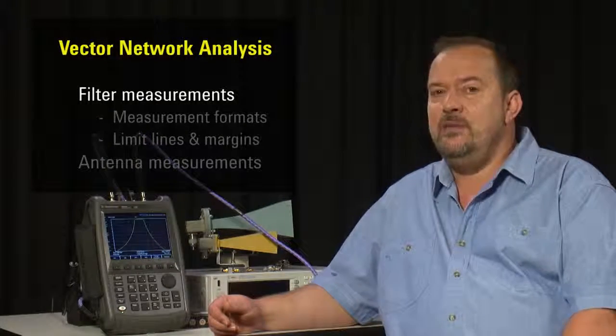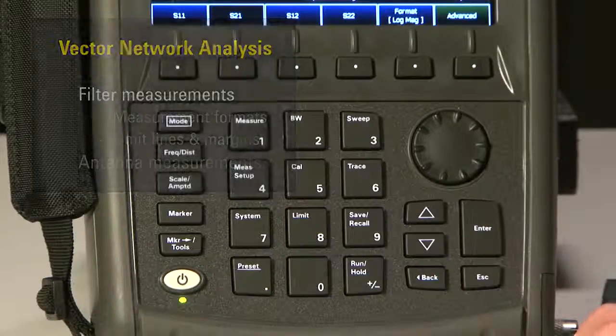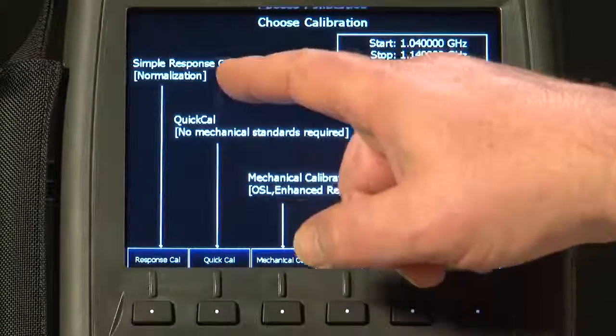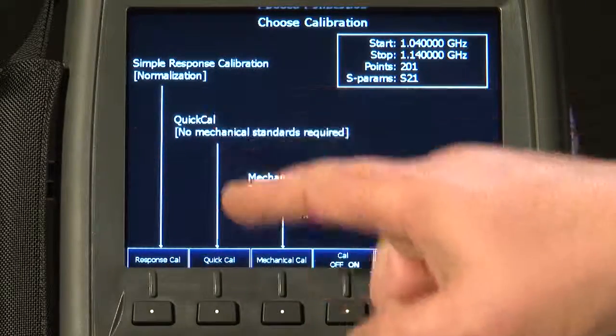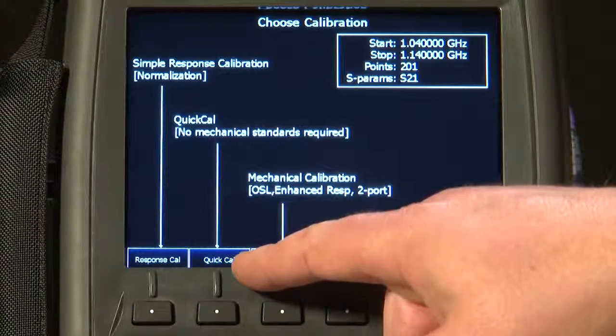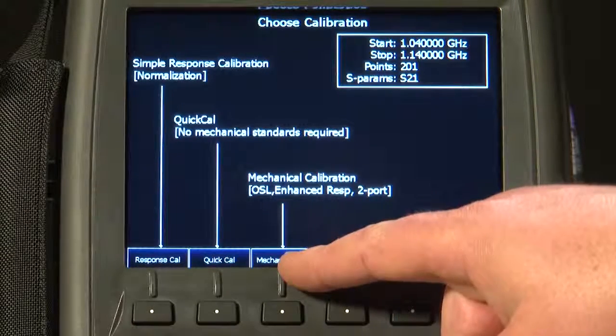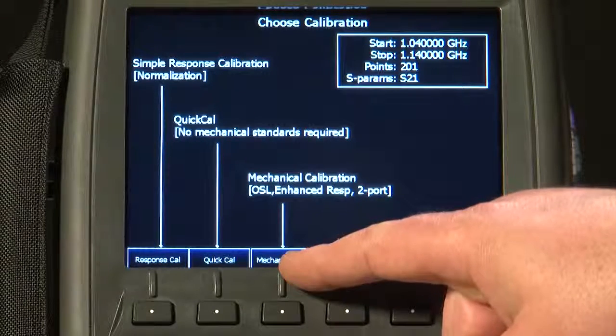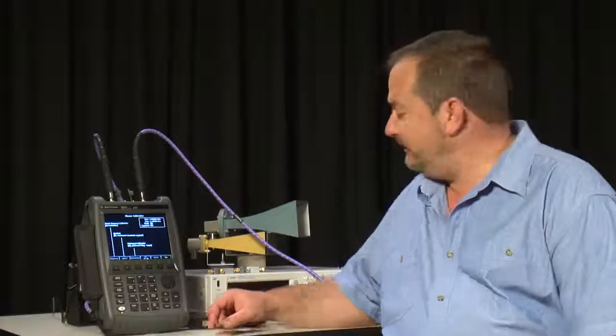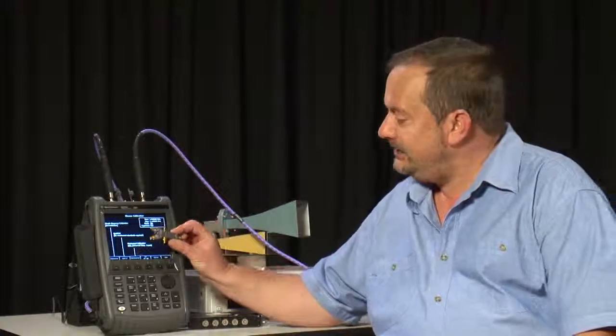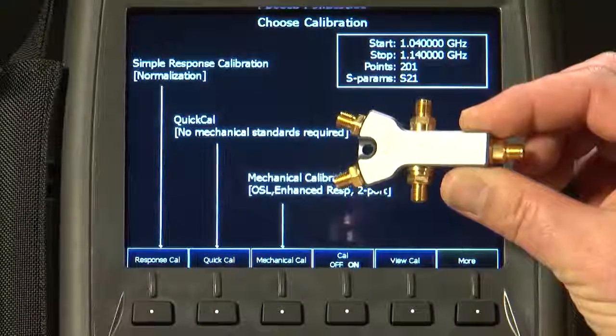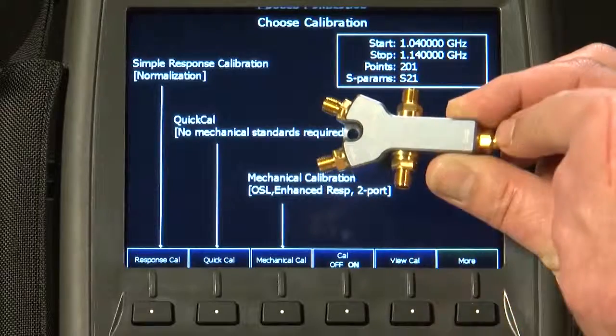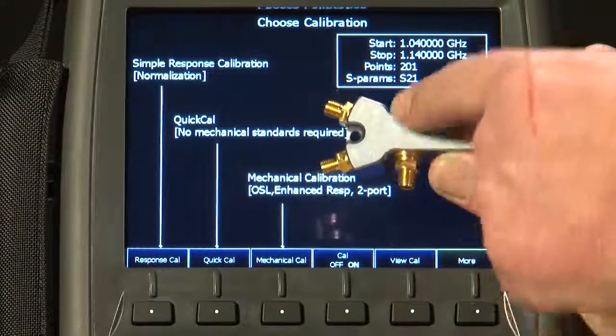Let's start by sweeping this tunable filter I have here. If I press the Cal button, you will see we have three calibration options: the Simple Response Calibration or Normalization, the Quick Cal where we don't need any calibration kit at all, but in this instance I have decided to use the Full Mechanical Calibration, that is a short, open, load, through for the ultimate accuracy. I have used one of these very cute four-way Agilent Cal kits that fit very conveniently in the FieldFox carry bag.